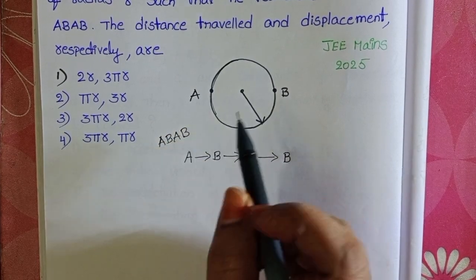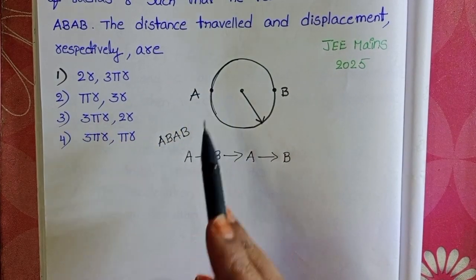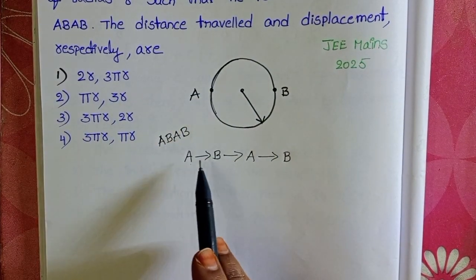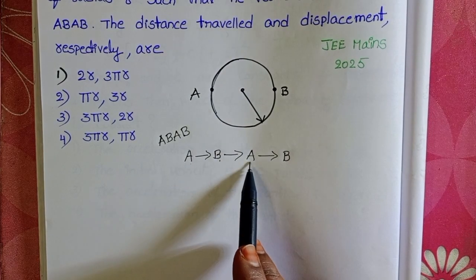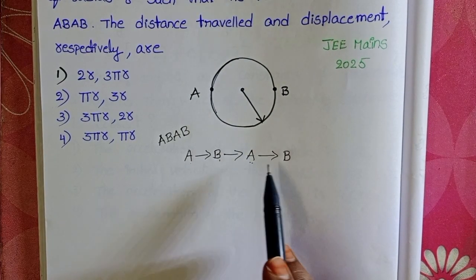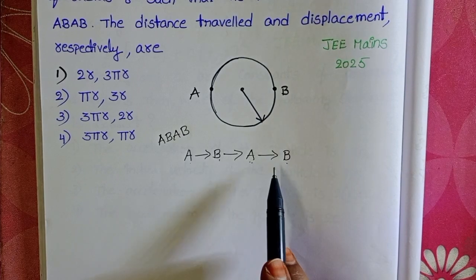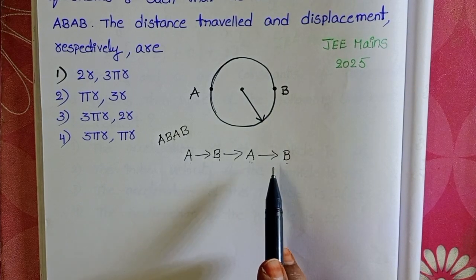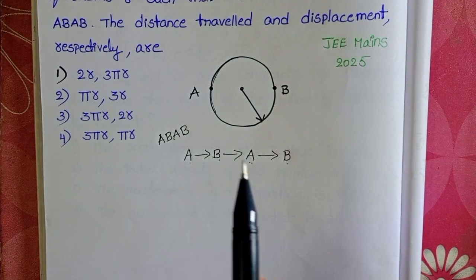The initial position is A. So from A to B position, again from B to A position, and finally from A to B position. This is the distance travelled by the sportsman.